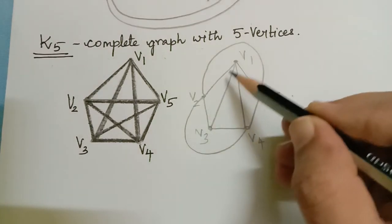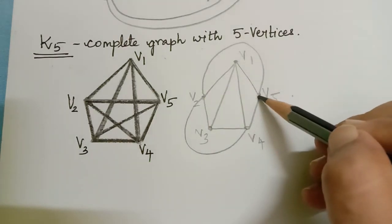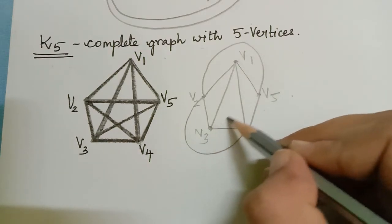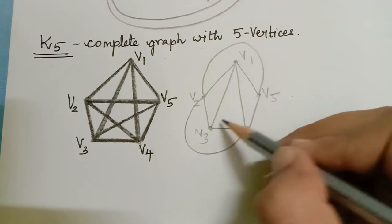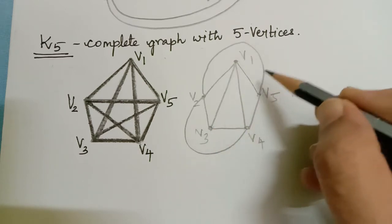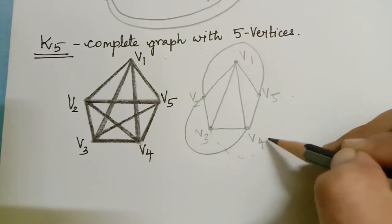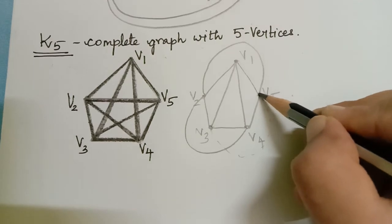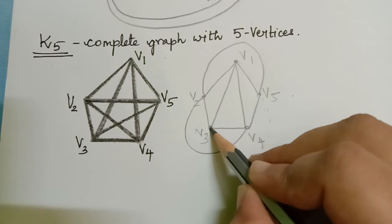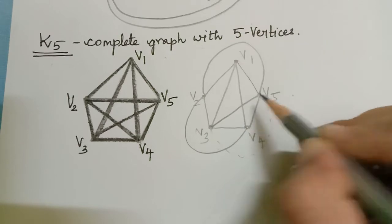From V3 we already have an edge with V1, V2, and V4. Now we have to draw an edge to V5. If we go in this direction there will be one crossing with an existing edge, and in any other manner there will also be a crossing. So with no other option, we have to draw it with one crossing.